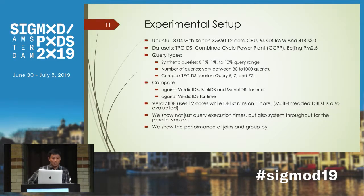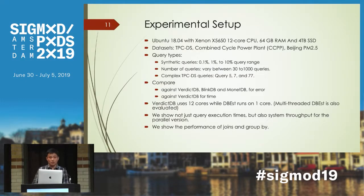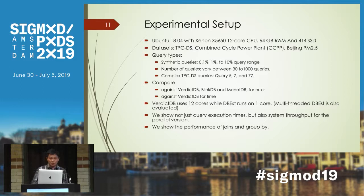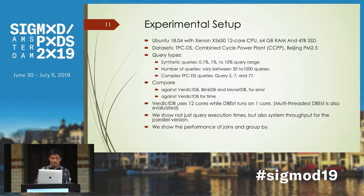The experimental setup uses the TPC-DS dataset as well as several datasets from the UCI machine learning repository. Query types include synthetic queries and complex TPC-DS queries. We made comparisons with VerdictDB, BlinkDB, and MonadDB. VerdictDB always uses 12 cores, while DBS runs on only one core.